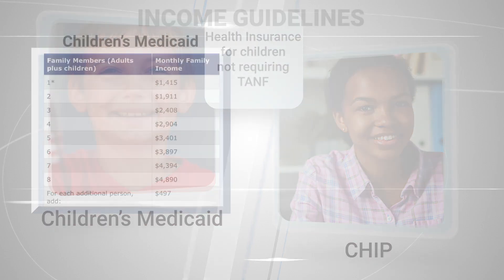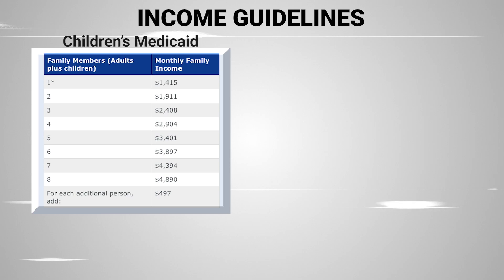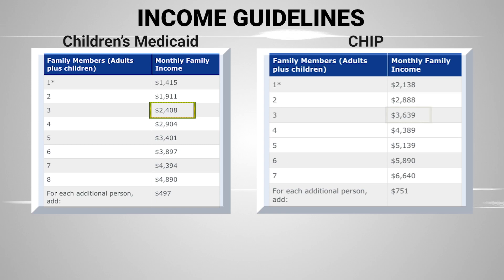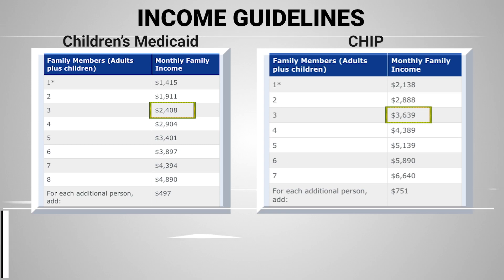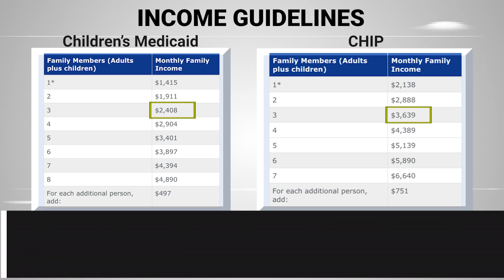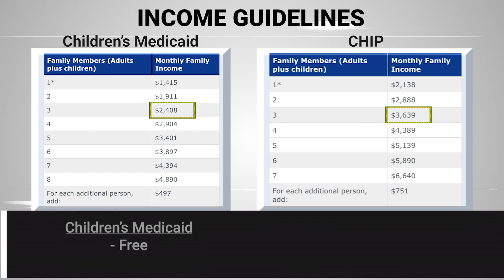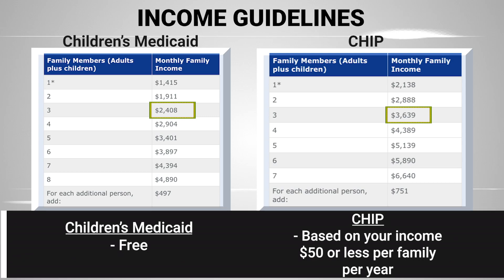Let's look at the income guidelines. For a family of three, to qualify for Children's Medicaid, your monthly family income would be at or below this amount. In comparison, to qualify for CHIP, a family's income would be this amount. To qualify, a child must be age 18 years or younger, a Texas resident, and a US citizen or legal permanent resident. Children's Medicaid is free. CHIP fees are based upon your income — enrollment fees are $50 or less per family, per year.